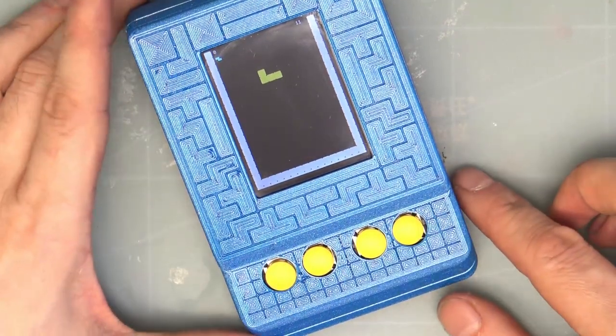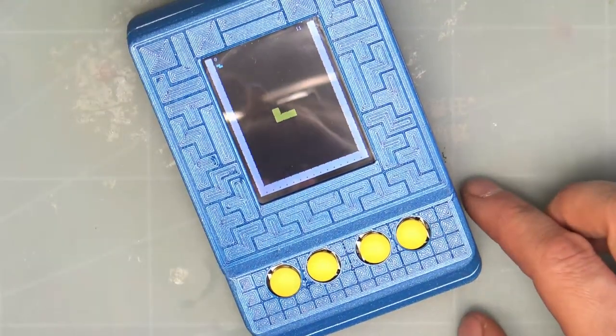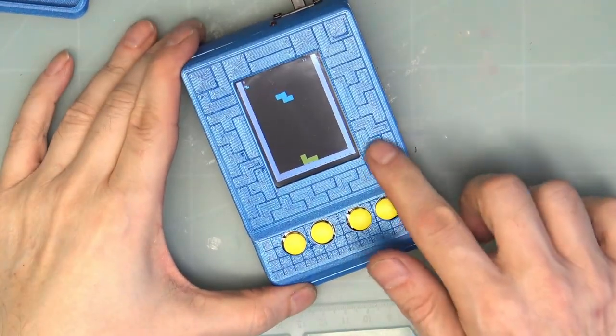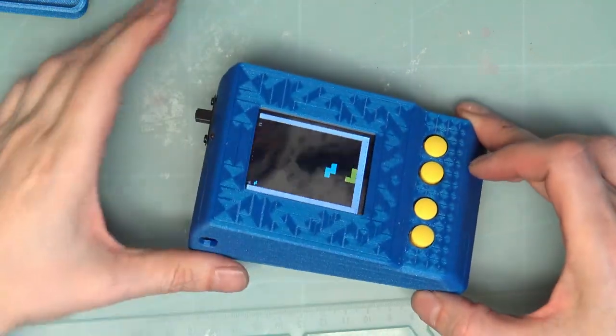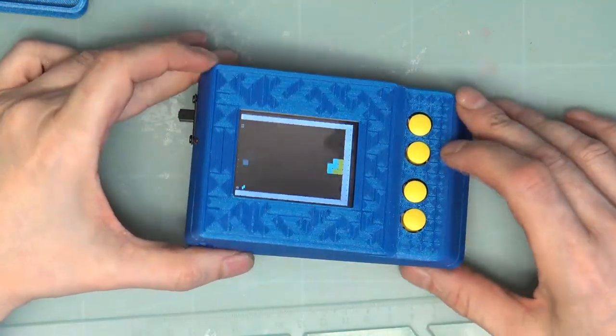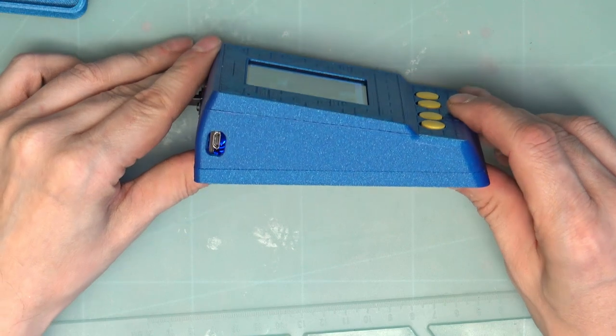So that is my Teensy Tetris. I really like the details on the front. The Tetris tiles came out really nice. This high five blue just prints so nice.